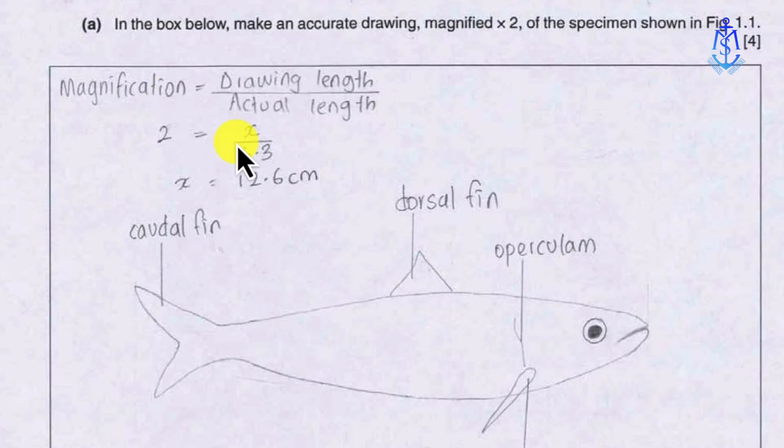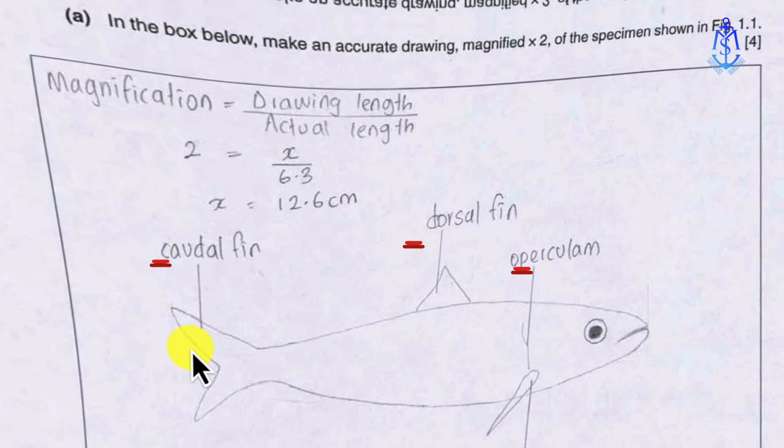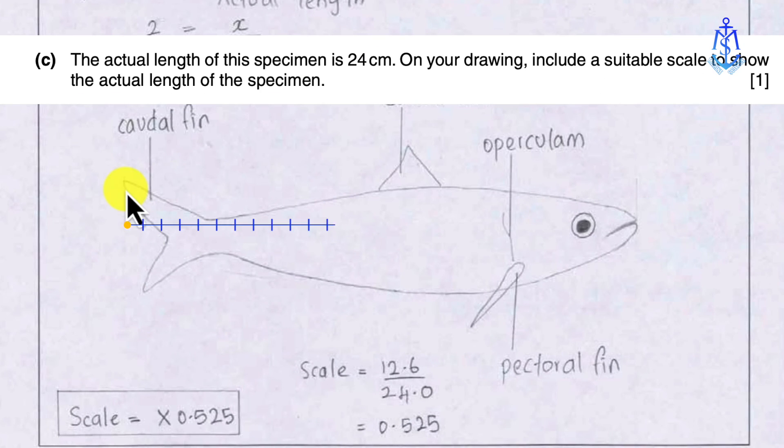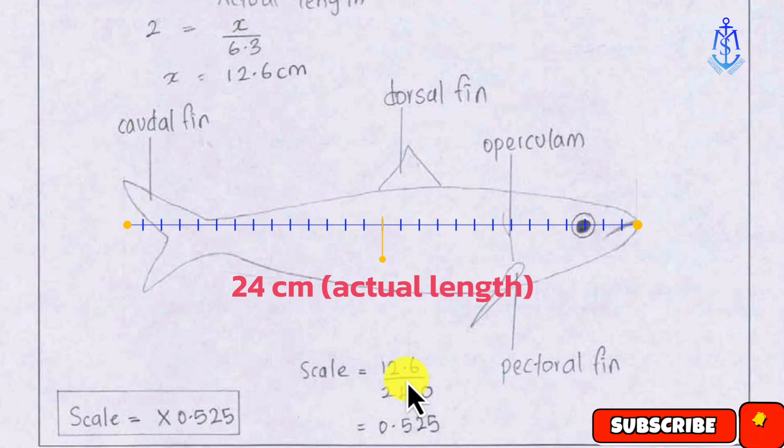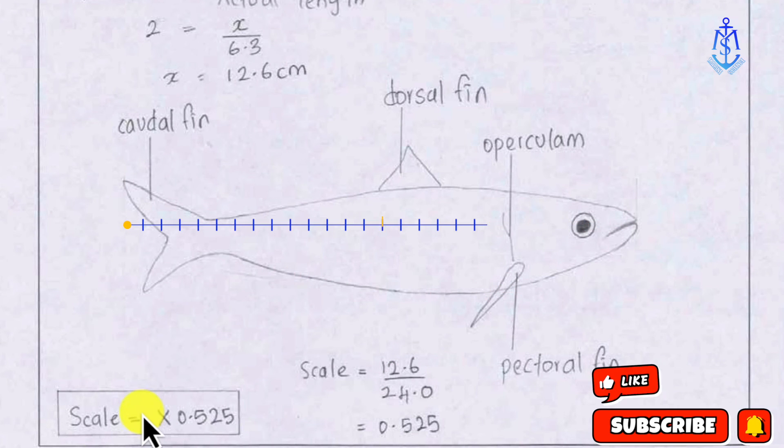This calculation results in a drawing length of 12.6 cm. Ensure to focus on the specified scale mentioned in the question. Following the guidelines as mentioned earlier, draw accurately and label the features that are mentioned in the question paper. Finally, the question mentions that the actual length of the specimen is 24 cm. On your drawing include an appropriate scale indicating the actual length of the specimen. Once you've completed the task, clearly mention the scale used.